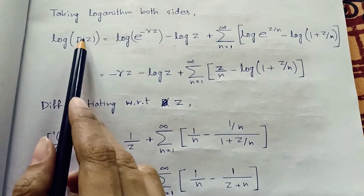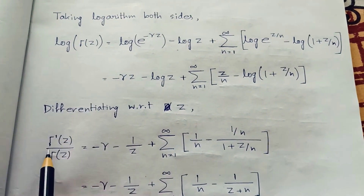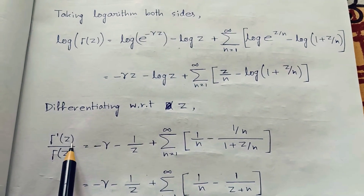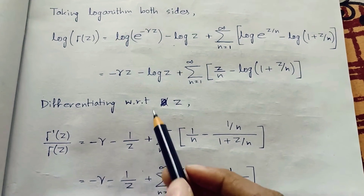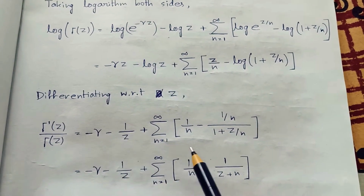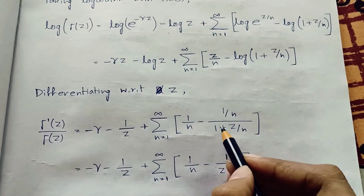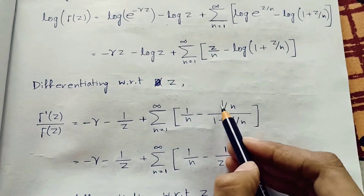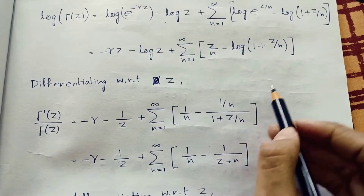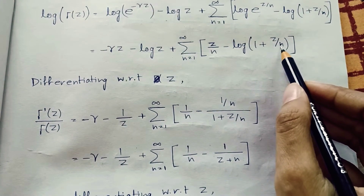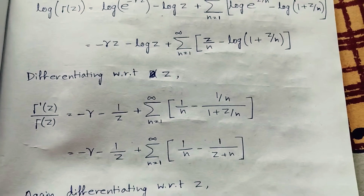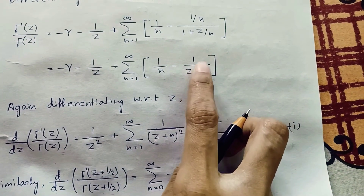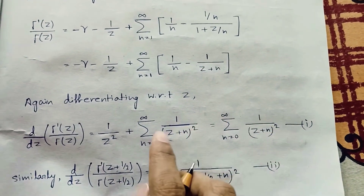After differentiating with respect to z, the left side becomes (1/γ(z))·(d/dz)γ(z), which is γ′(z)/γ(z). The term −γz differentiates to −γ, log(z) becomes 1/z, and the summation term differentiates to give 1/n minus 1/(z+n), since 1/n is the coefficient of z.